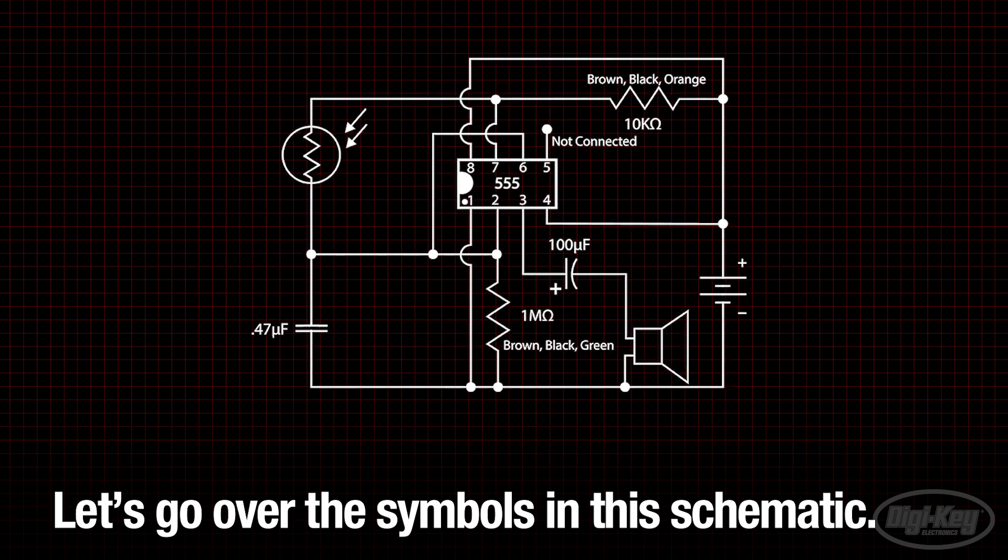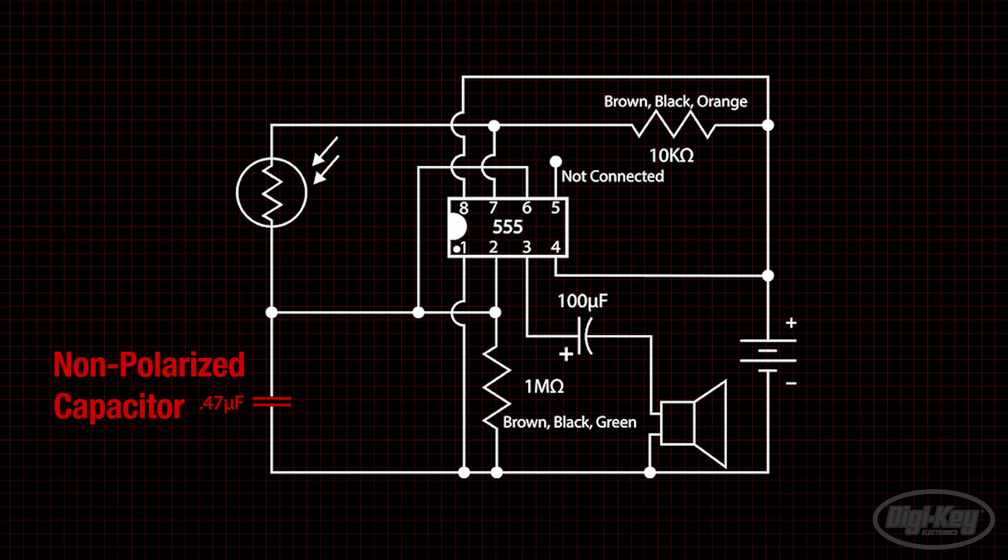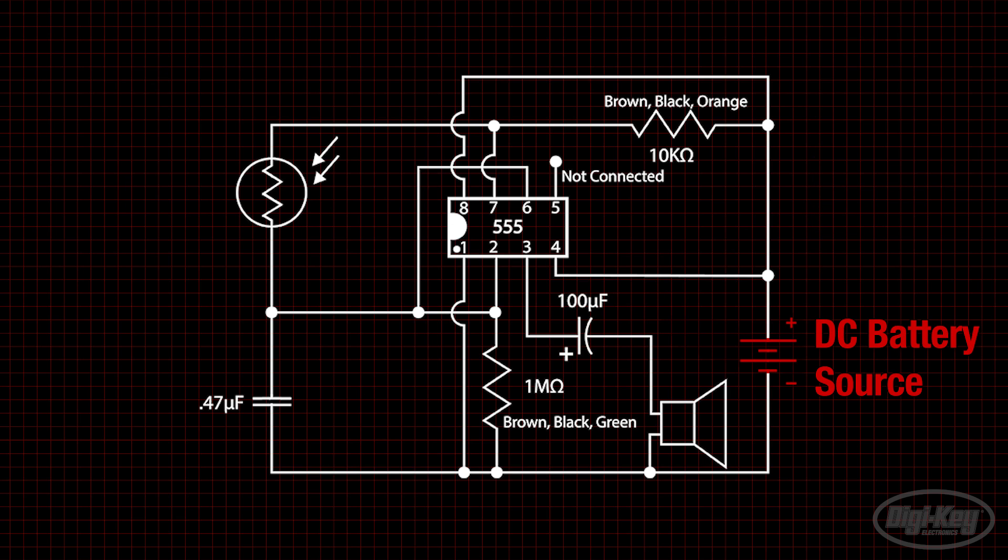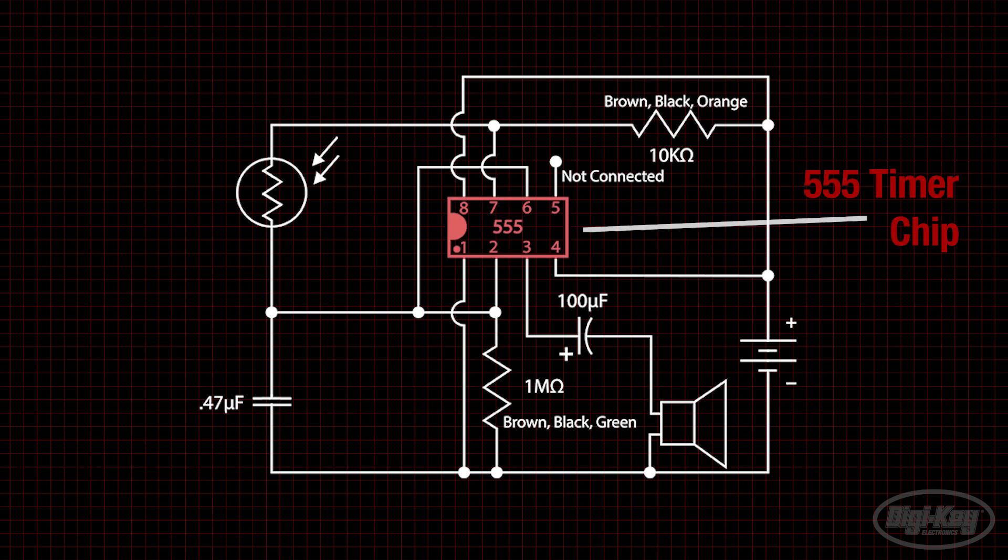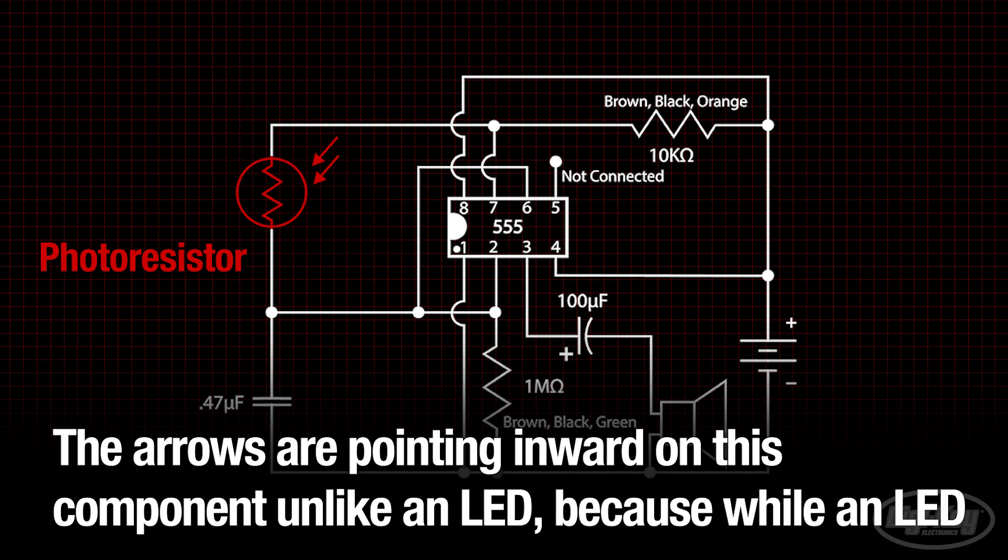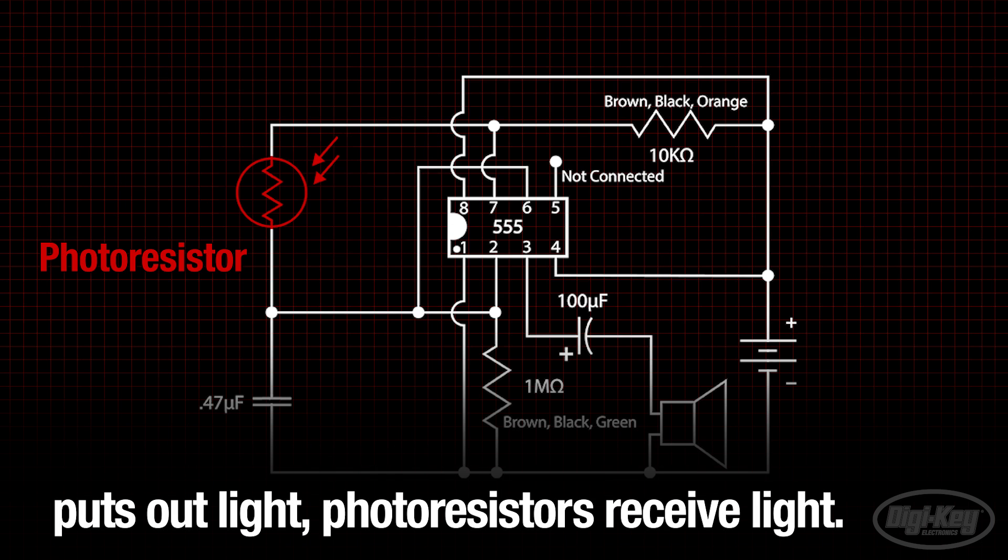Let's go over the various symbols in the schematic. First, there is a non-polarized 0.47 microfarad capacitor, a couple of resistors, a 100 microfarad polarized capacitor, a DC battery source, a speaker, a 555 timer chip, and a photoresistor, which you'll notice has a circle and arrows around a typical resistor symbol. The arrows are pointing inward on this component, unlike an LED, because while an LED puts out light, photoresistors receive light.